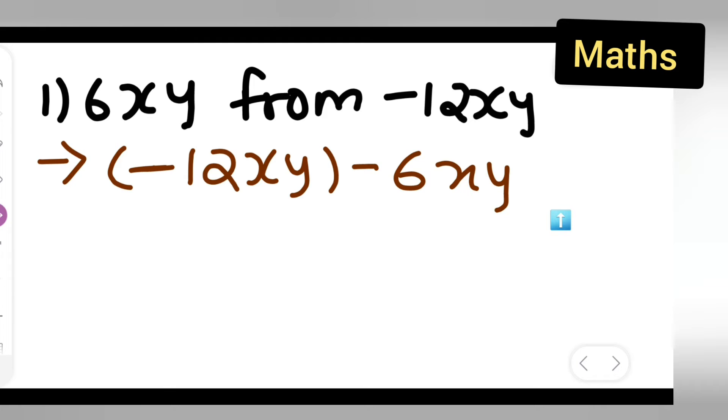So what you're going to get is: write down -12 minus 6. Now you can see this -12xy, here also xy is there, here also xy is there, right? So write -12 minus 6 as it is, and take xy as common.